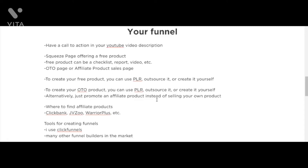For example, you could create a quick checklist showing all the tools needed to buy Bitcoin and cryptocurrency, and offer that as a free gift. In your description, say something like 'Click here to find out the best tools for buying Bitcoin and other cryptocurrencies.' The product has to be related to the topic of the video. When they click the link, they're brought to your funnel. The first page should be your squeeze page offering a free product, with an opt-in form where they enter their email address.